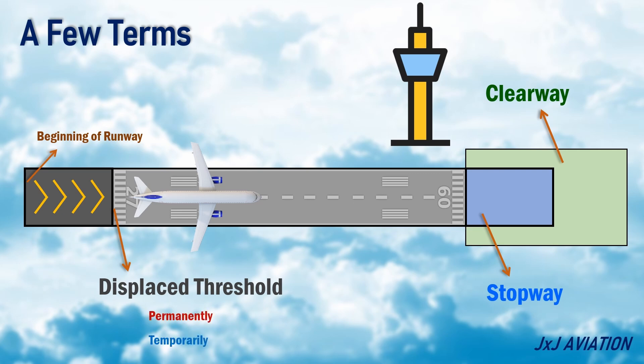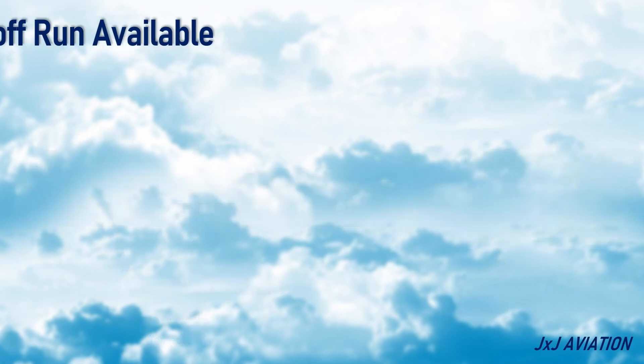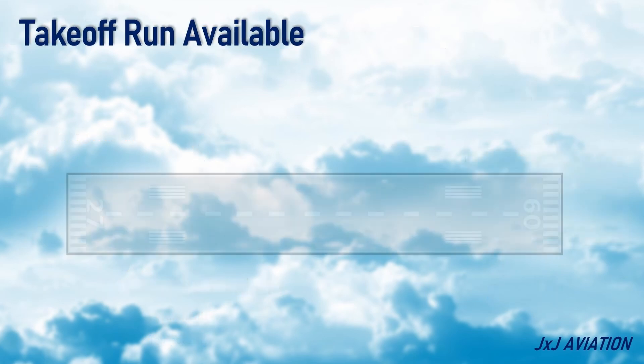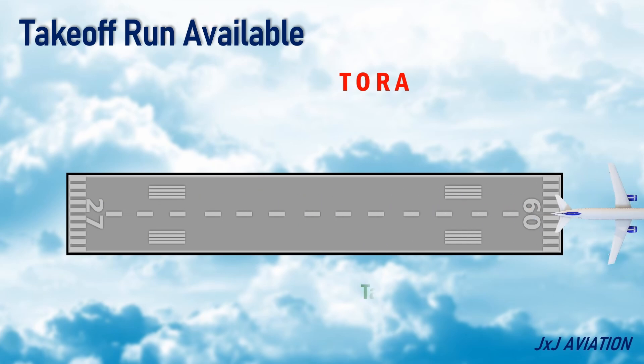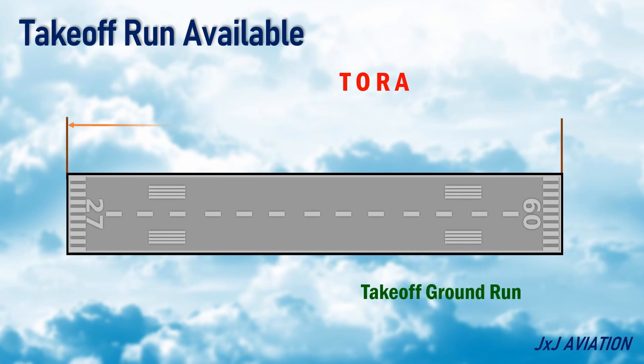These terms are used to understand the declared distances. Takeoff run available, TORA: this is the total length declared available for the ground run of an aircraft for takeoff. Takeoff run available will not exceed the length of the runway.